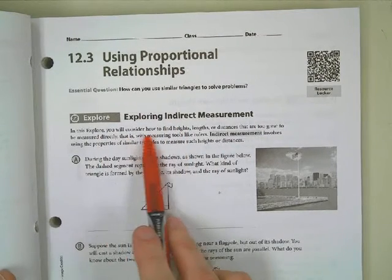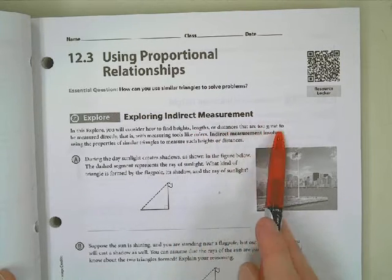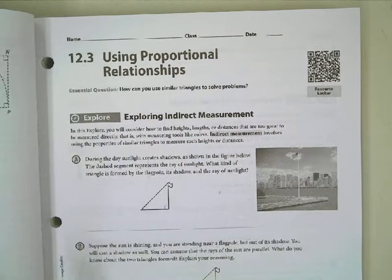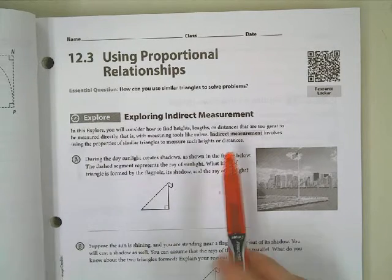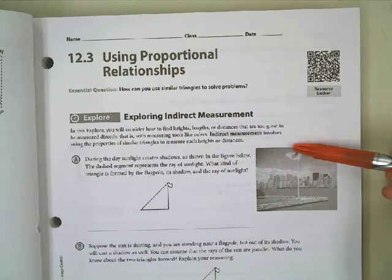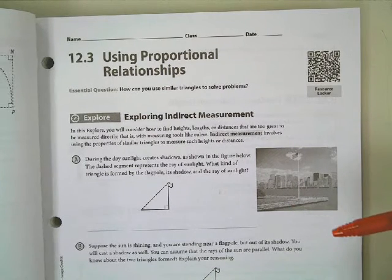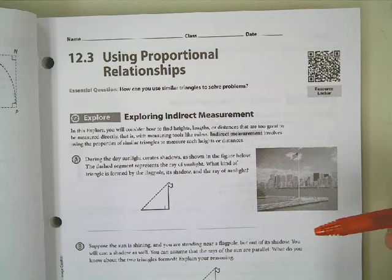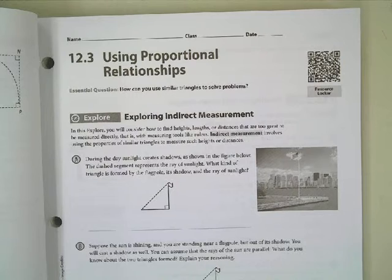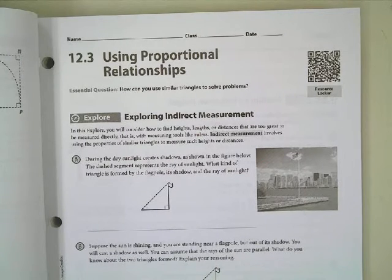In this explore, you'll consider how to find heights, lengths, or distances that are too great to be measured directly with measuring tools like rulers, or they might be difficult to measure. Indirect measurement involves using the properties of similar triangles to measure such heights or distances. For example, if you look at this flagpole — to measure the height of a flagpole, you can't just walk up to it and take a tape measure like you could with someone's height. For the flagpole, you'd have to climb to the top, which is pretty dangerous. Instead, we can use similar triangles.